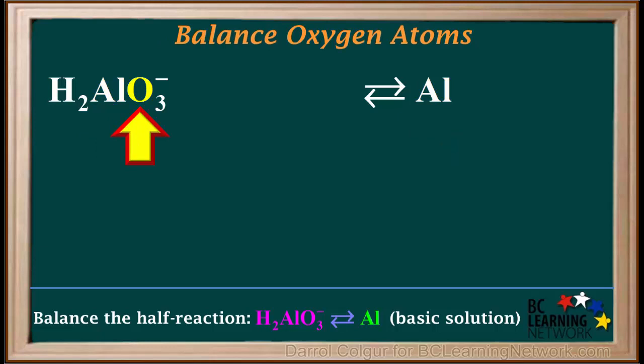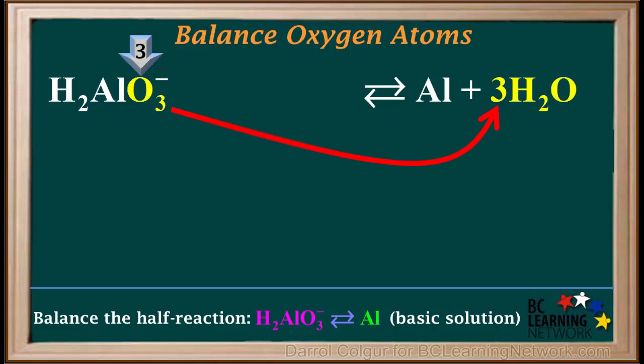The next step is to balance oxygen atoms. Notice we have three oxygen atoms on the left side. We balance oxygen atoms by adding a water molecule on the right for every excess oxygen atom on the left. So we add three water molecules to the right side. Now we have three oxygen atoms on both sides, so oxygen is balanced.